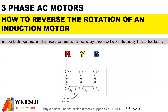How do you reverse the rotation of an AC induction motor? Looking at the terminal box, the three stator windings are connected in star, bridged horizontally. The first line is color coded red, the second stator coil has a line color coded yellow, and the third stator coil has a line color coded blue. In order to change the direction of a three-phase motor, it is necessary to reverse two of the supply lines to the stator — so we simply swap the red wire and the yellow wire to reverse the direction of rotation.